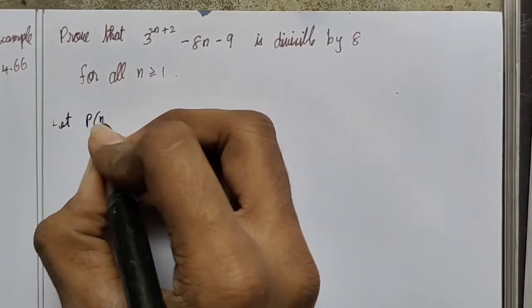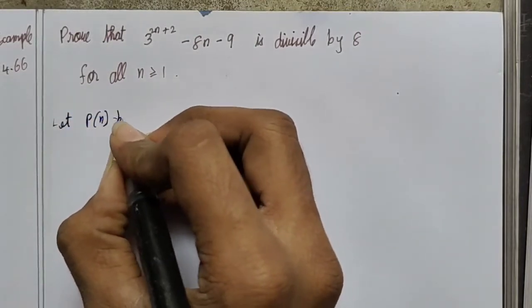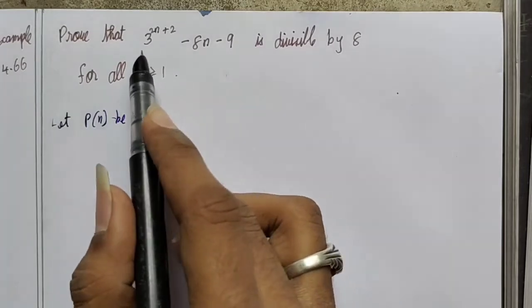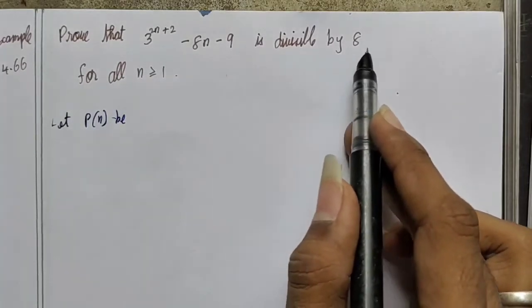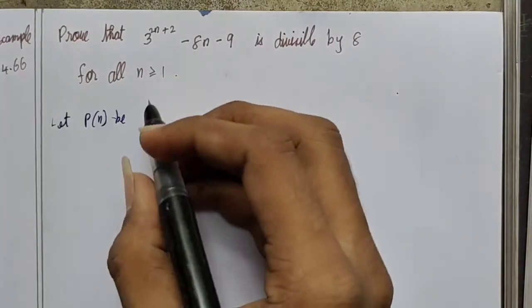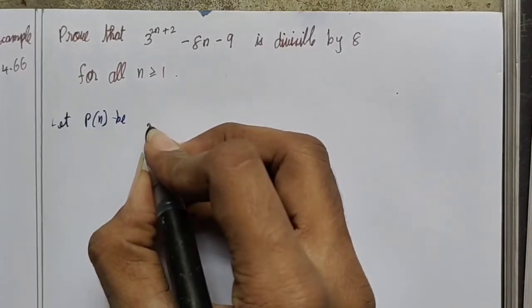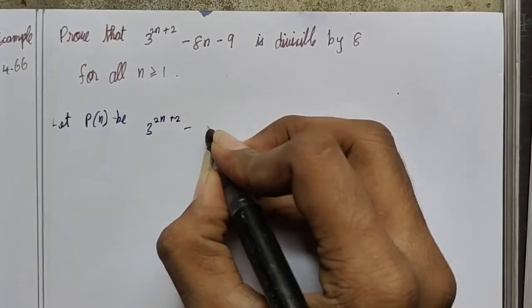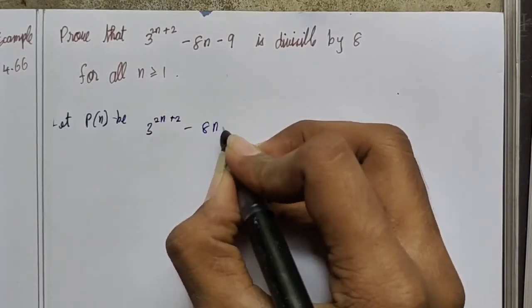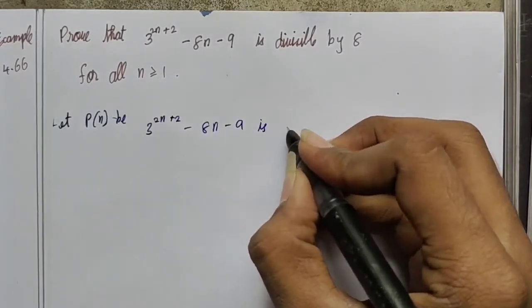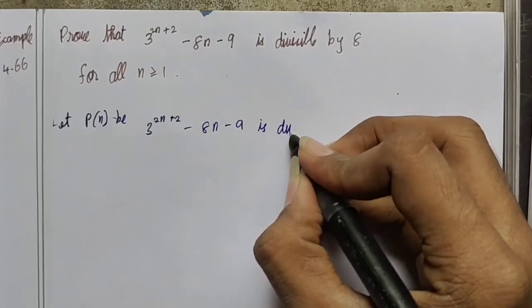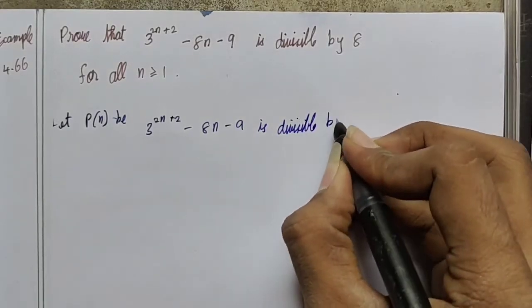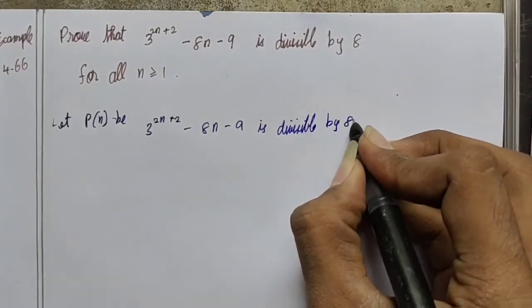Let P of n be the statement that 3 power 2n plus 2 minus 8n minus 9 is divisible by 8. This is P of n.